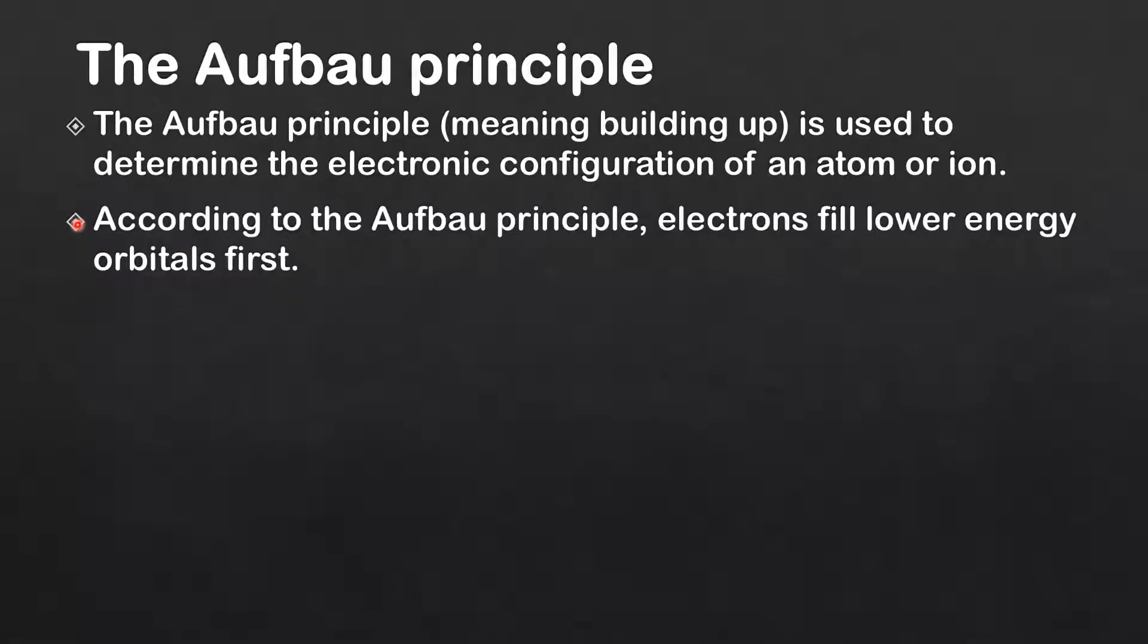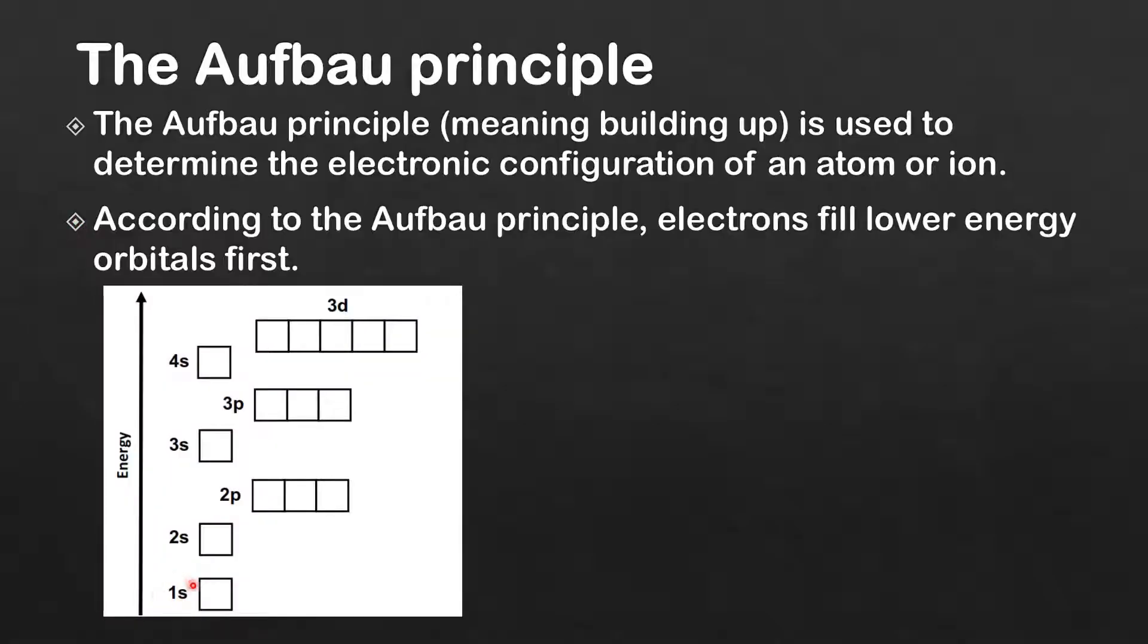According to the Aufbau principle, electrons fill lower energy orbitals first. Here you can see the energies of the atomic orbitals, starting with the lowest energy—that's the 1s atomic orbital, then we have the 2s atomic orbital, then the 2p.